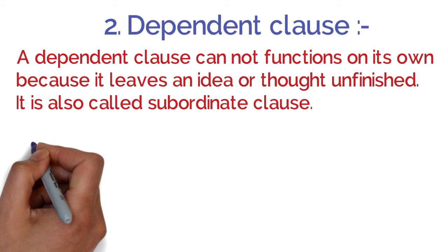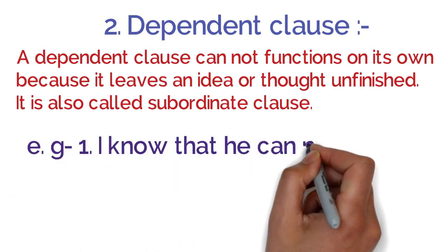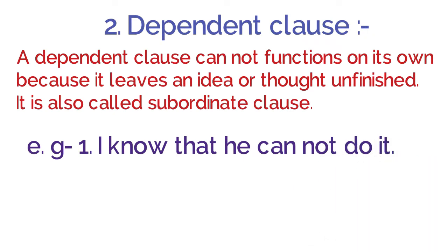For example: 'I know that he cannot do it' — mujhe pata hai ki woh nahi kar sakta. Is sentence mein do clauses hain — ek dependent clause aur ek independent clause. 'I know' jo ki is sentence mein independent clause hai, aur 'that he cannot do it' yeh poora dependent clause hai. Is dependent clause ko complete karne ke liye 'I know' ko add karke sentence complete kiya gaya hai.